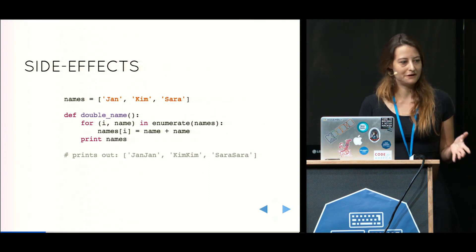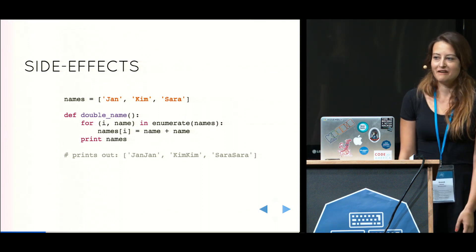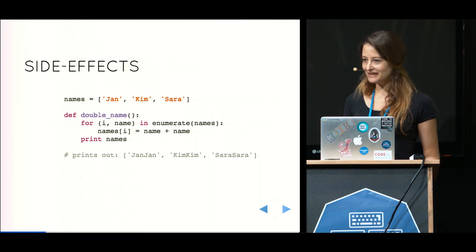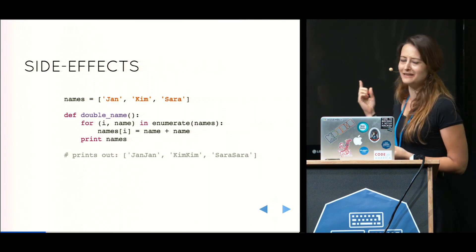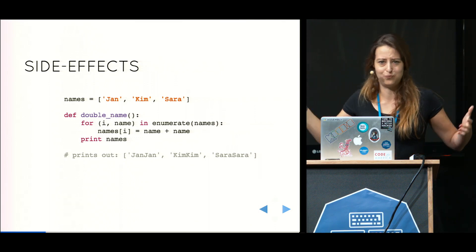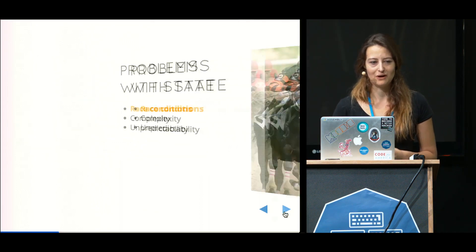So that is state. Now if you're coming from imperative programming and you're looking at this and you're like, yeah, I do this every day. These are very normal things for me. Why are you making such a big deal about state? And also, why would I want to use anything that doesn't allow me to do this? This is pretty awesome. Why not?